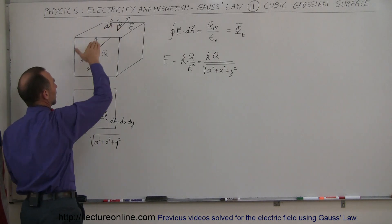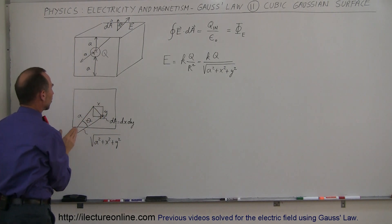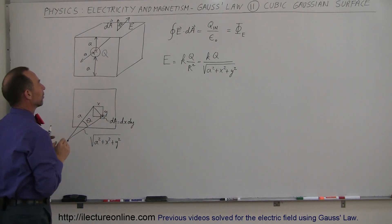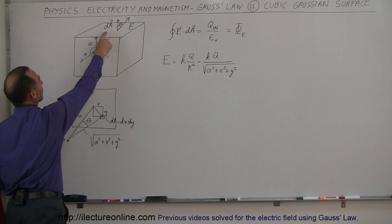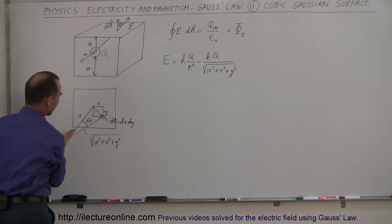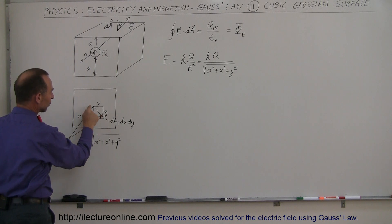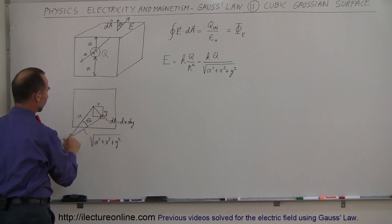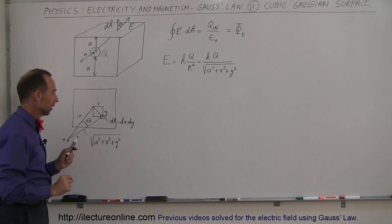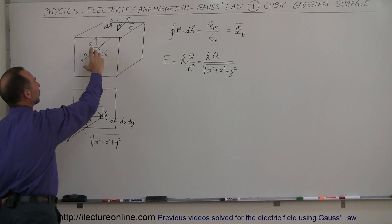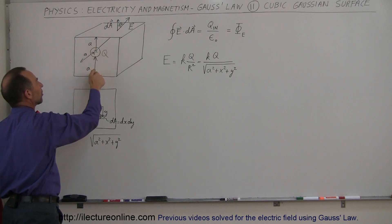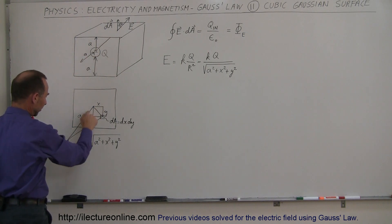I've taken the surface and folded it up. Here's our charge at the center, and we're looking from the center of the cube toward one of the faces. This is the central point of the face directly above the charge, so the line from there to the surface would be perpendicular. Let's pick a point away from the center. The distance from the charge to the face, called A, is the same in all directions — to the front, bottom, and top face.